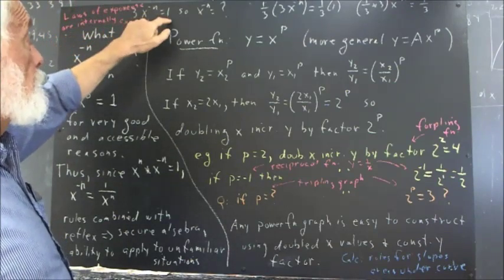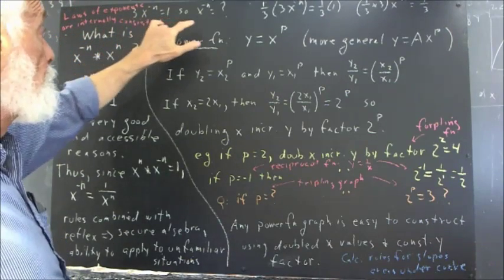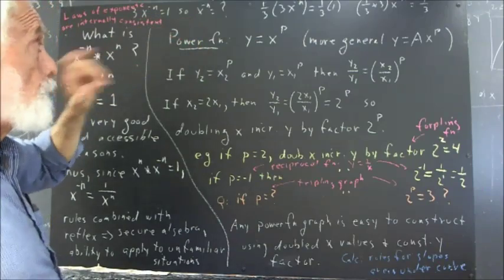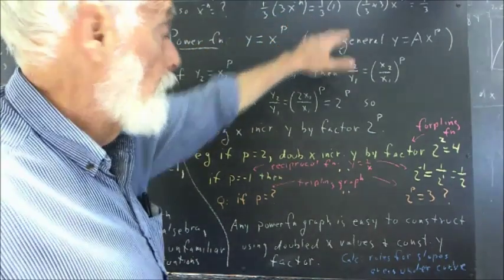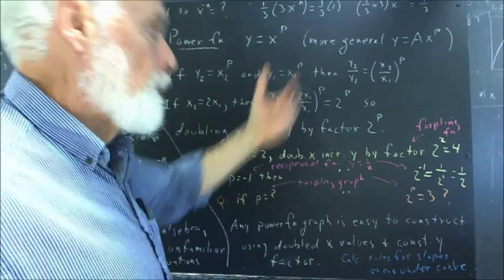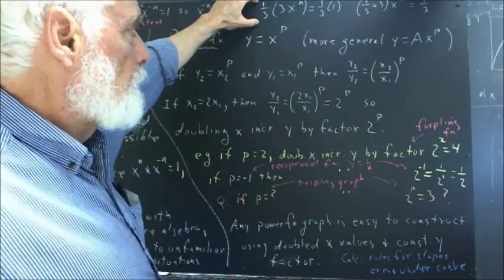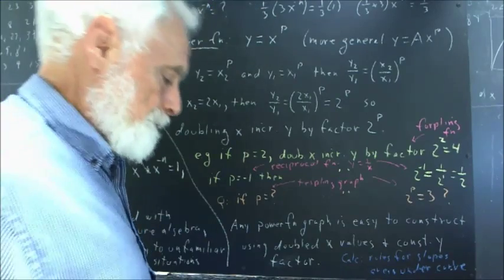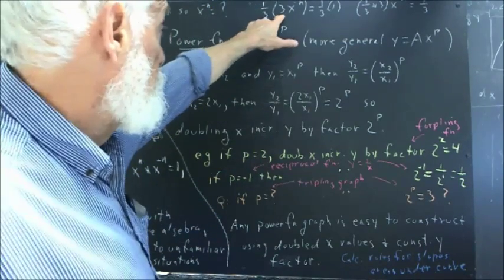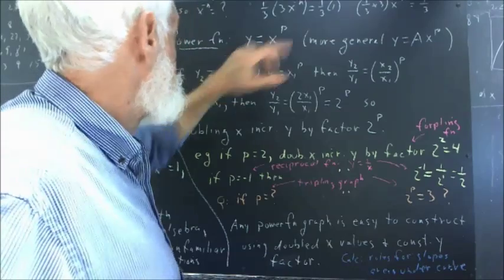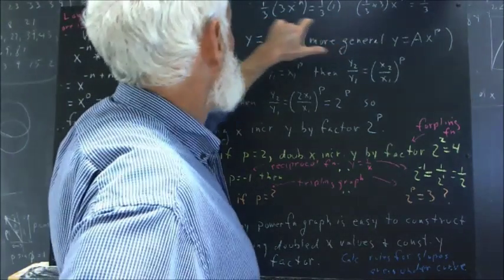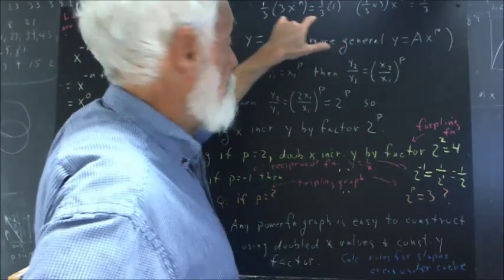3x to the negative n equals one. How do you solve that? Nobody could tell me. You multiply both sides by one third, or if you like, you can divide both sides by three. I usually tend to prefer multiplying because it's a little more general. Multiplying by the reciprocal of the number you want to get rid of on one side. So we multiply both sides by one third.